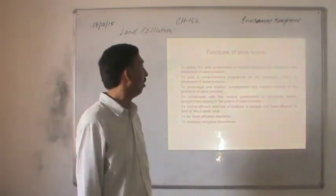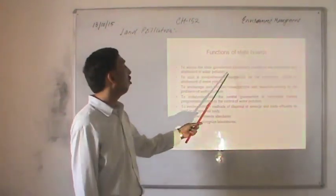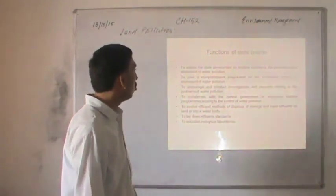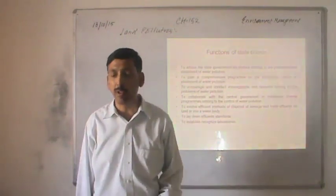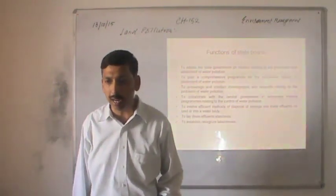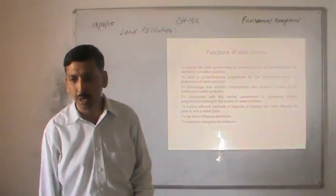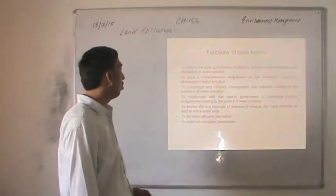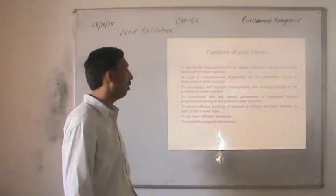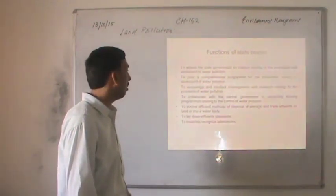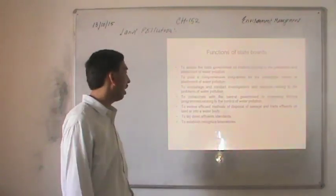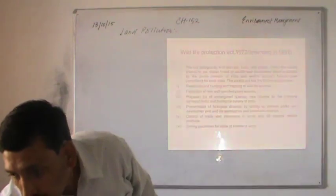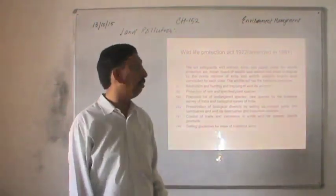Functions of the state board include: to advise the state government on matters relating to the prevention and abatement of water pollution; to plan comprehensive programs for the prevention, control and abatement of water pollution; to collaborate with the central government in organizing training programs; to evolve efficient methods for the disposal of sewage and trade effluent; to lay down effluent standards; and to establish recognized laboratories for analysis.